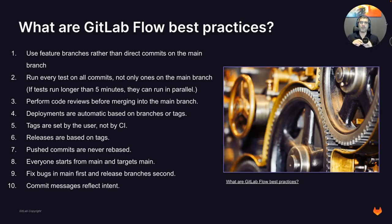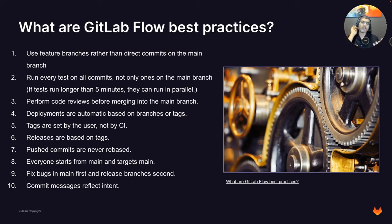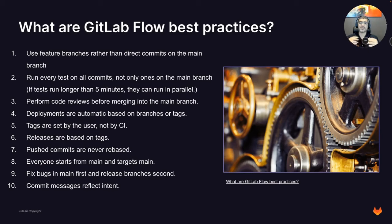Now let's look at GitLab Flow best practices. First: use feature branches rather than direct commits to the main branch. Use your own feature branch, have a draft merge request declared, tell everyone you're working on a feature—people can still collaborate, but use your own branch. In GitLab you don't have to merge into main just to run testing; functional and security testing are available right in your branch. Second: run every test on all commits. Run tests as much as possible on each and every commit, get the feedback, and fix it immediately—just in time.